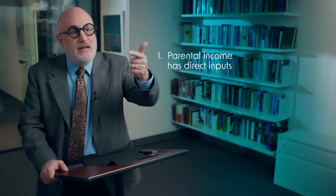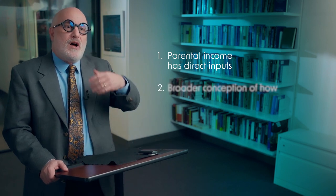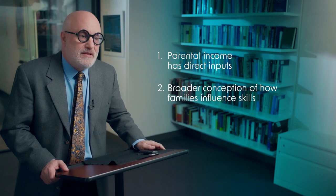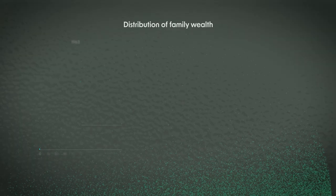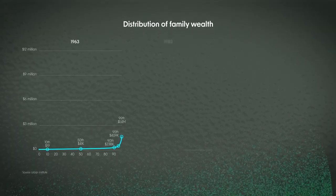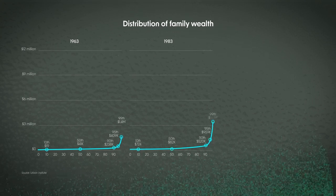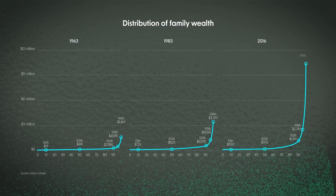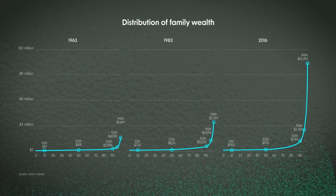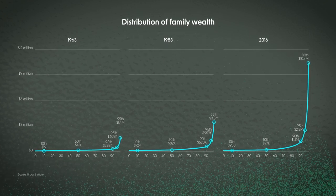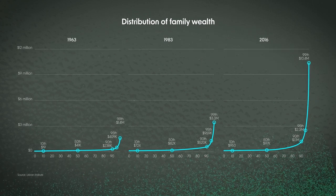To summarize: first, parental income has direct inputs. Second, there's a broader conception of how families influence skills. Third, family wealth matters. Wealth is extremely skewed in the United States, and that skewness has dramatically increased in the last 50 years. Wealth is an additional contributory factor to intergenerational income persistence for the obvious reason that not all income is generated by labor market earnings. For most people the dominant form is labor market earnings, but for some, wealth transfers also matter.